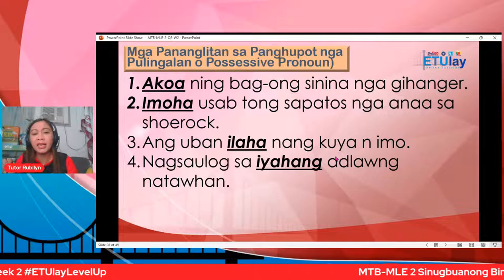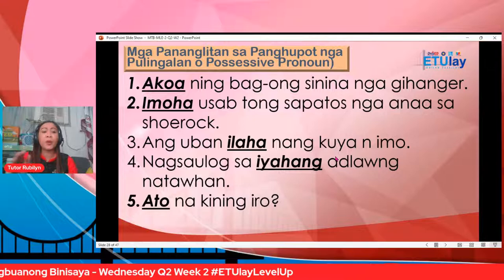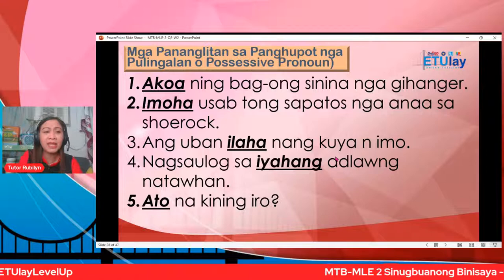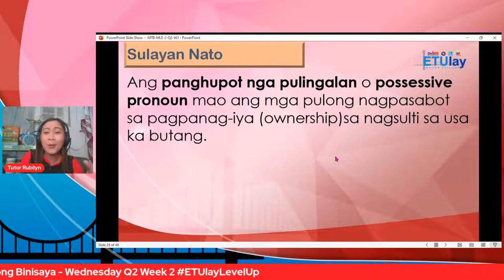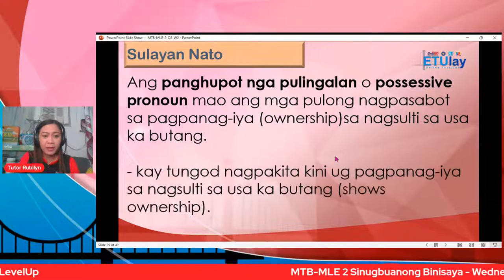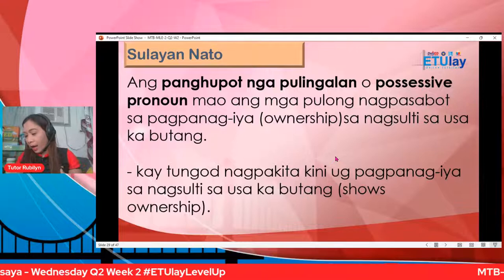Sulayan na ito mga bata. Ang panghupot nga pulingan o possessive pronoun mawa mga pulong nagpasabot sa pagpanag-iya sa nagsulti sa usaka butang. Kahit tungod, nagpakita kini o pagpanag-iya sa nagsulti sa usaka butang — it shows ownership. Ako ah — ako ning cell phone — ako ang nanag-iya, I own it. It shows ownership.